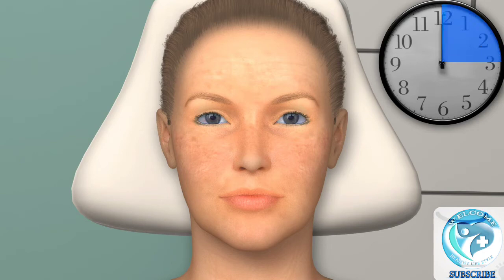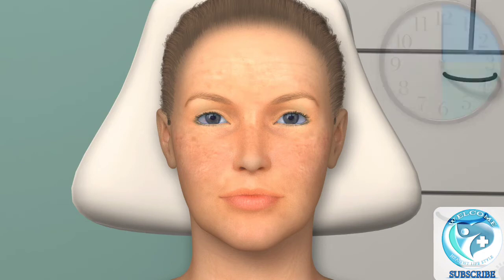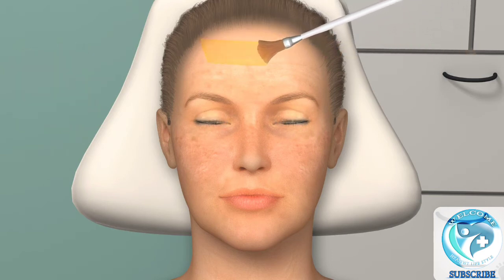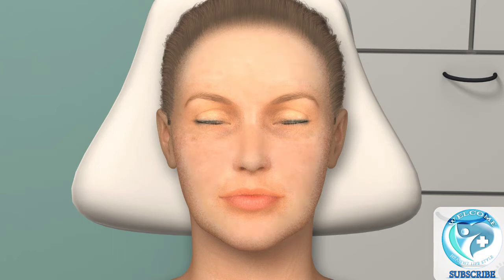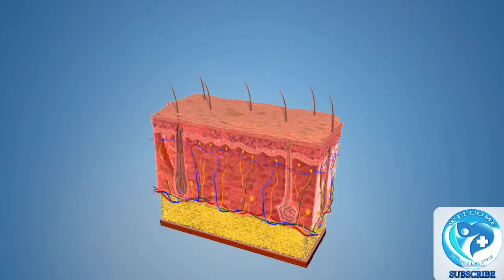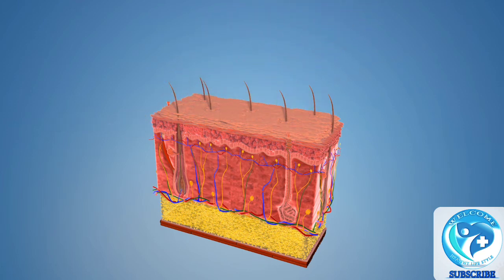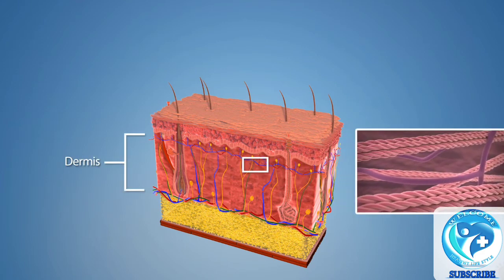Medium peels typically last between 15 to 30 minutes. The treatment area will be cleansed, and your provider will apply the chemical solution to your skin and allow it to penetrate the treatment area for a few minutes. Next, your provider will remove or neutralize the chemical solution. Trichloroacetic acid application may cause frosting of the skin, during which the treatment area may turn a whitish-gray color, but this is temporary and will fade after your treatment. The chemical solution damages the layers of the epidermis, causing them to peel away, and can also penetrate the upper layers of the dermis, stimulating collagen production.